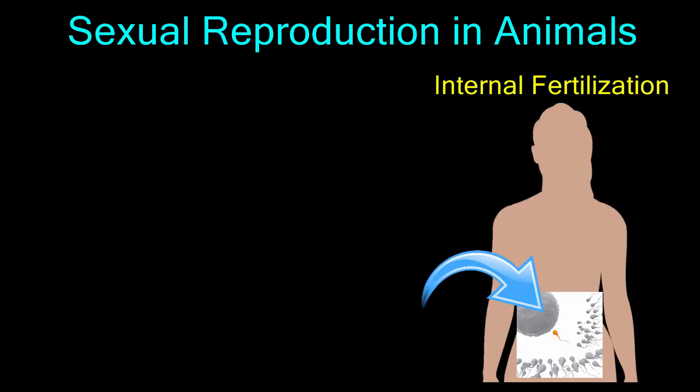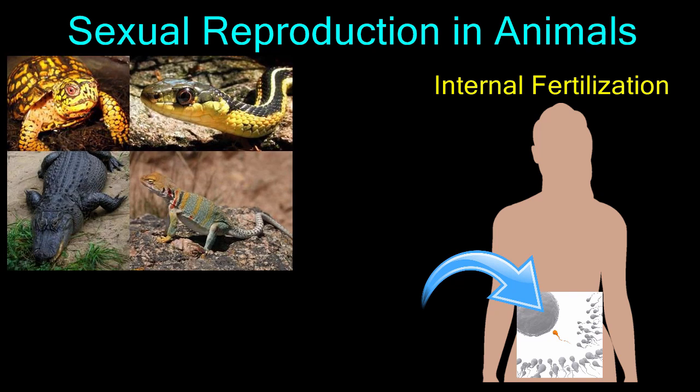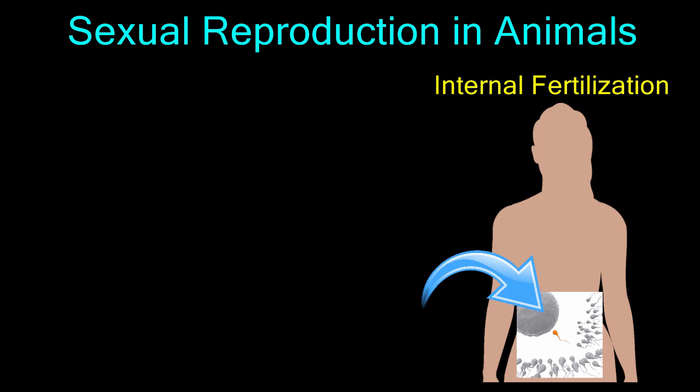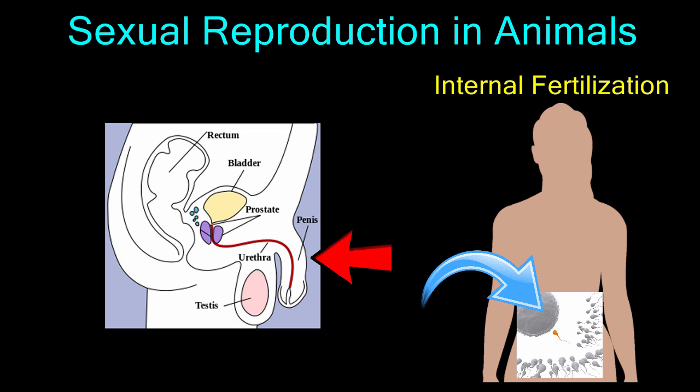Internal fertilization means that egg and sperm fuse inside the female's body and therefore requires the act of sex. Reptiles, like snakes and lizards, birds, and mammals like we humans use internal fertilization to reproduce. Internal fertilization required the evolution of the penis in male animals so they could deposit sperm inside the body of the female.